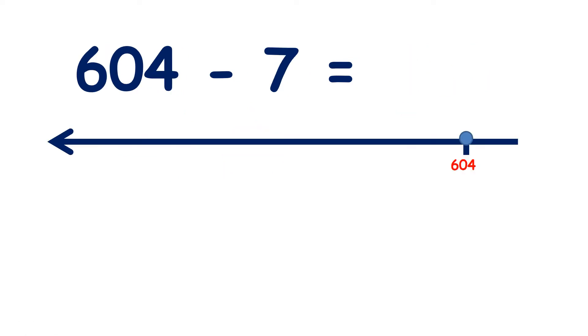Now we have 604 minus 7. So if we count back 7 from 604, we get 603, 602, 601, 600, 599.